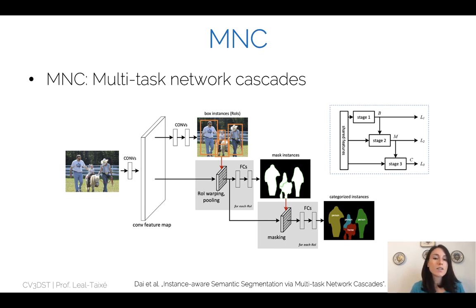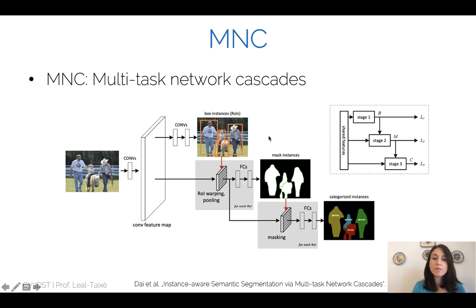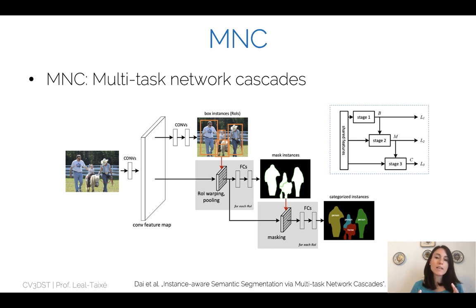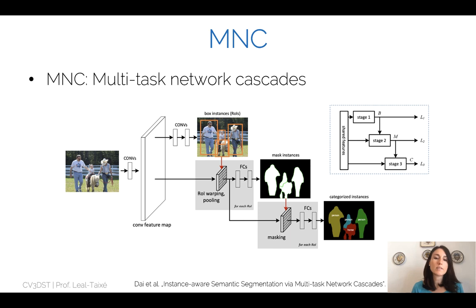Multitask network cascades proposes a slightly more complex approach. Starting from regions of interest — proposals — you first convert them into mask instances and later refine into categorized instances, assigning a class to each. You compute everything by looking at the region of interest, which is pooled and warped, to create mask instances and categorized instances.